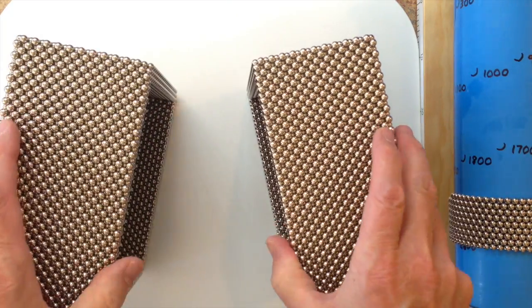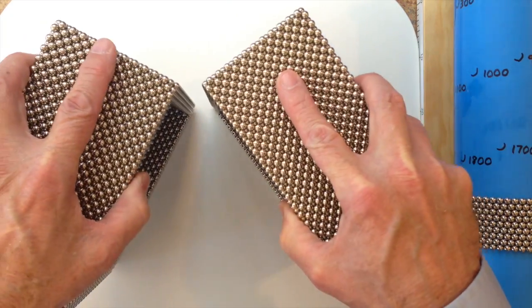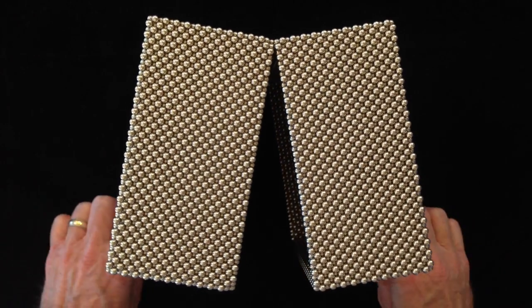The bottom half has 24 layers and the top has 23 for a total of 47 layers.